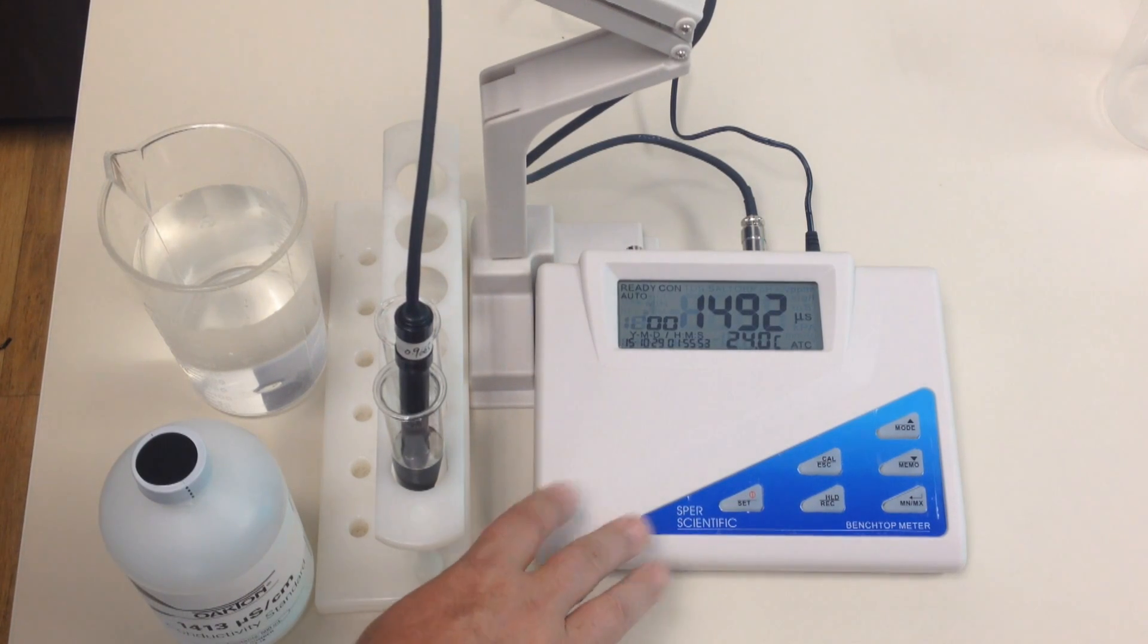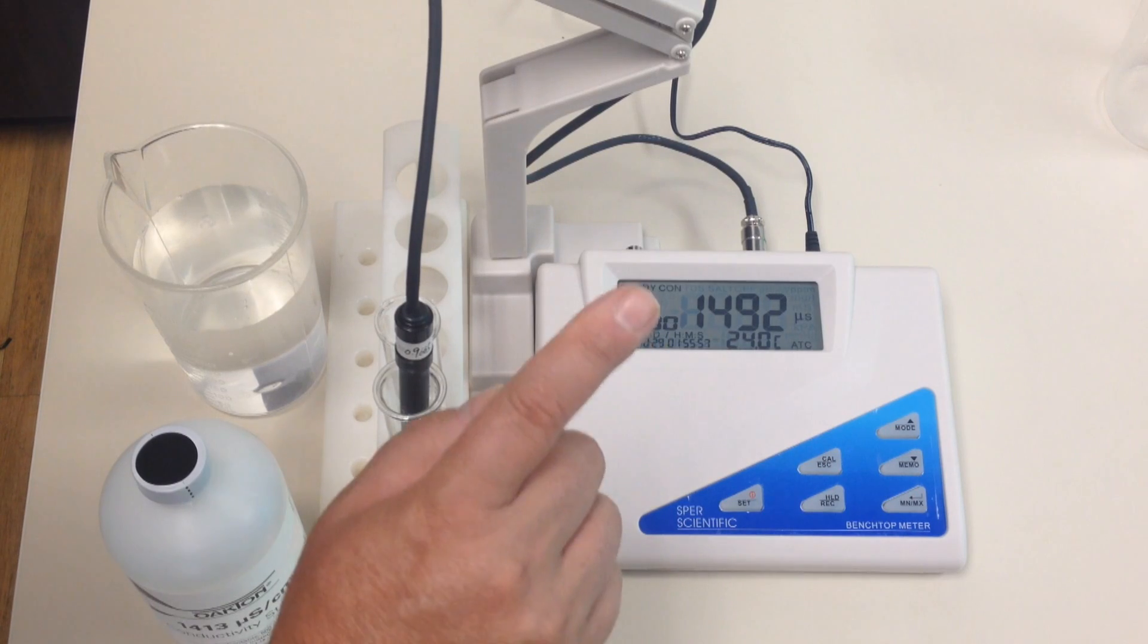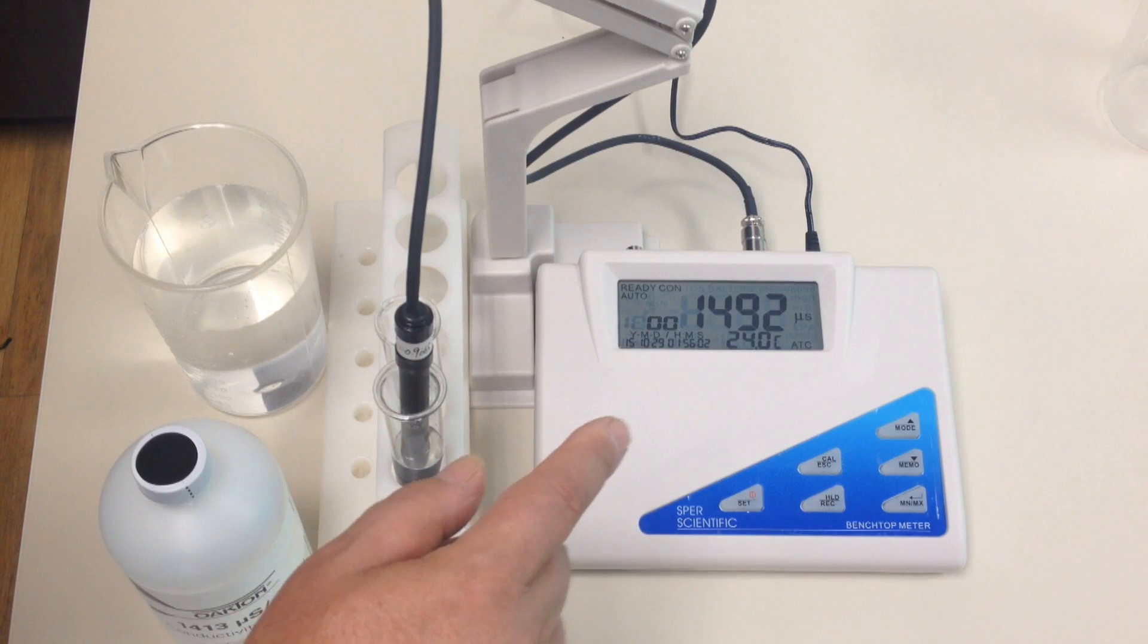I do want to point out, any time you calibrate the unit, this unit does five different ranges, you are only calibrating one of those ranges. And when it resets just that one range, it doesn't reset all five ranges.